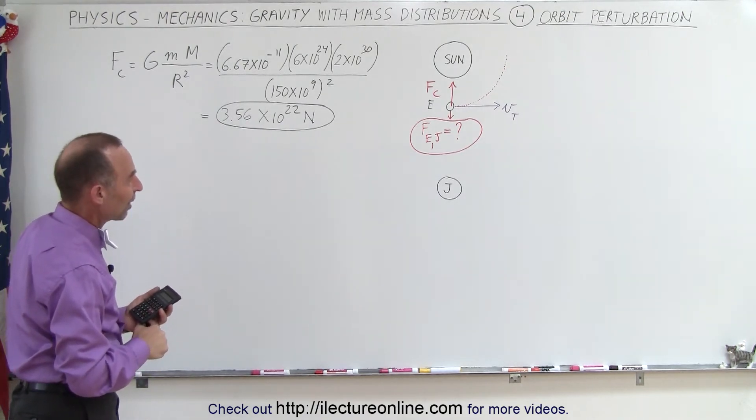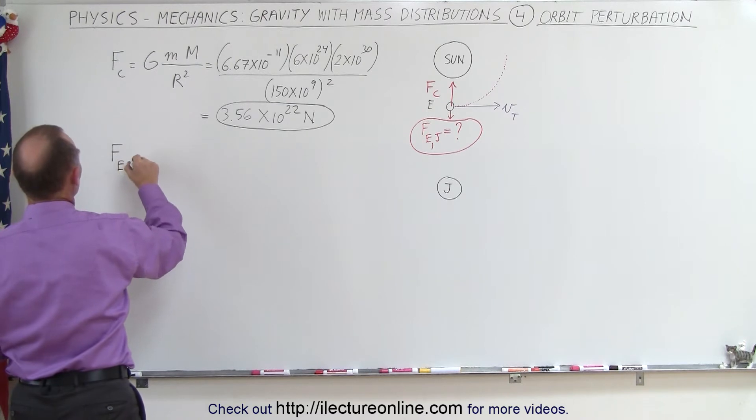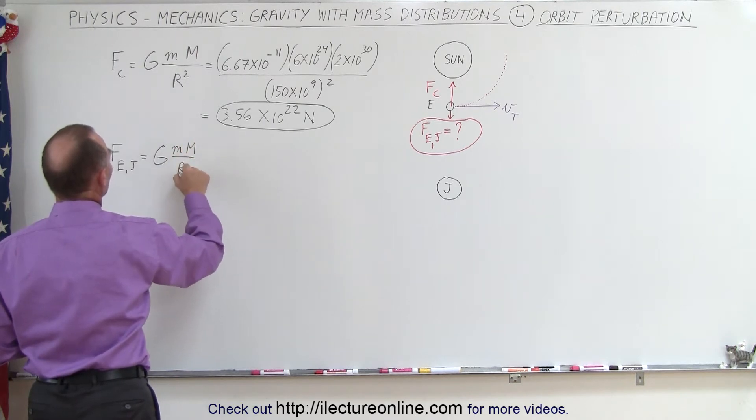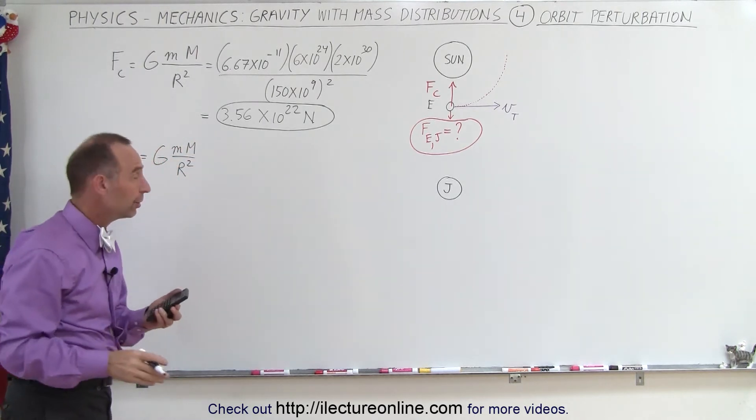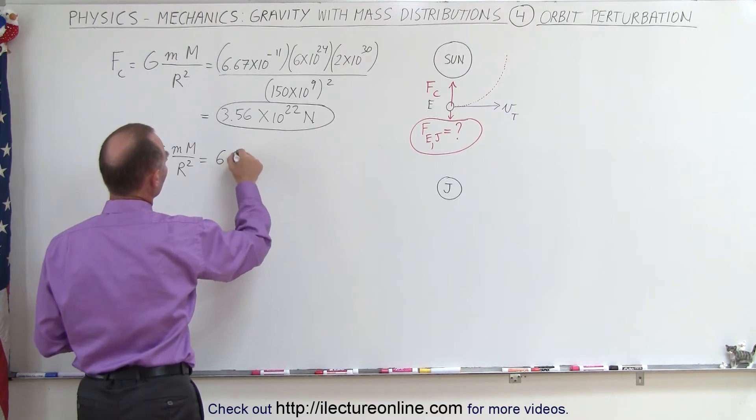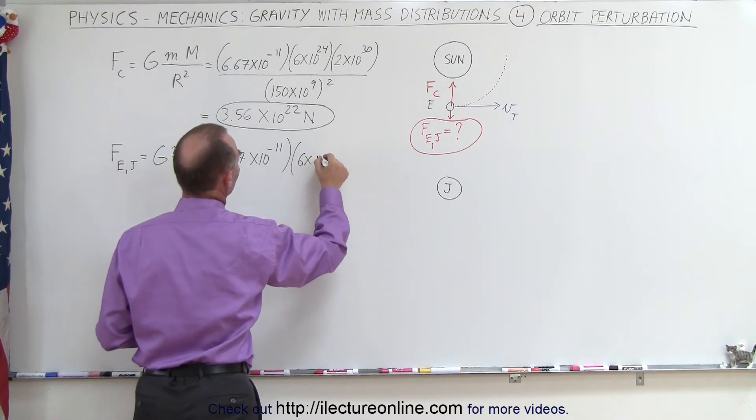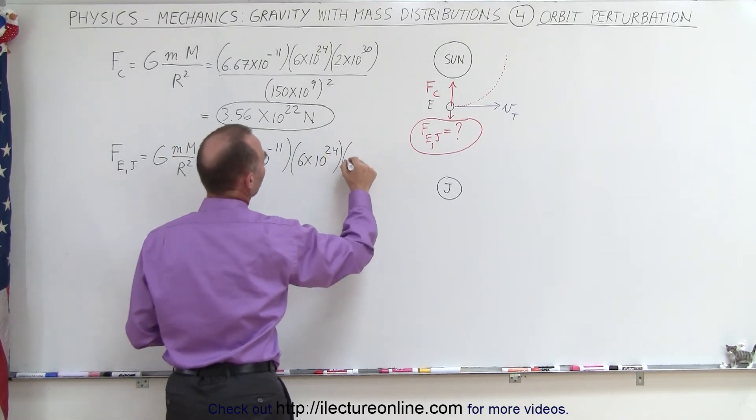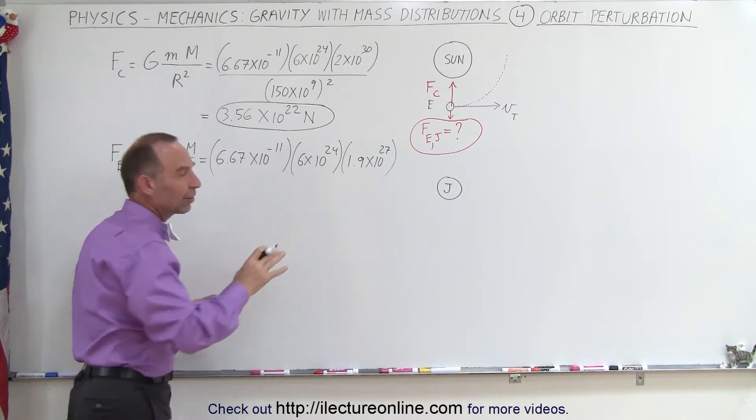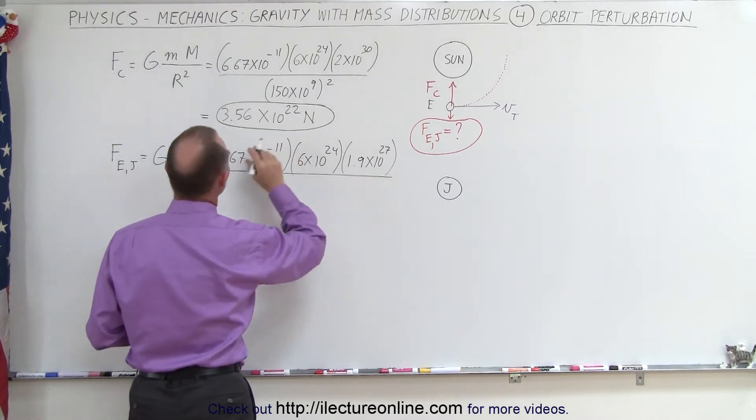Now let's find out what the force of attraction is between the Earth and Jupiter. Now the force between Earth and Jupiter is going to be equal to Gm big M over R squared. Now in this case, big M will be the mass of Jupiter, and R will be the distance between the Earth and Jupiter. So this is equal to 6.67 times 10 to the minus 11, the mass of the Earth, and the mass of Jupiter, which is about 1.9 times 10 to the 27th. So you can see here that the mass of Jupiter is roughly a little bit more than 300 times the mass of the Earth.